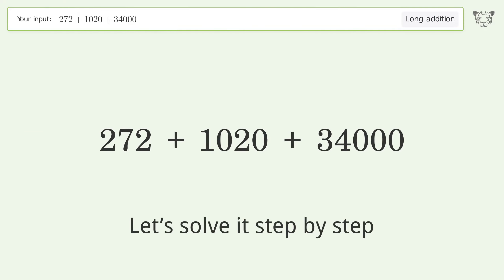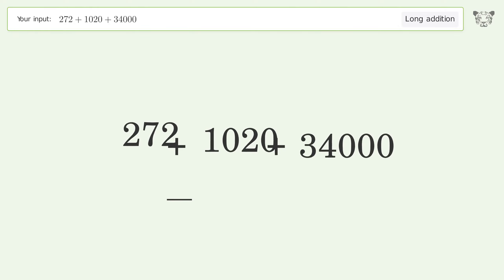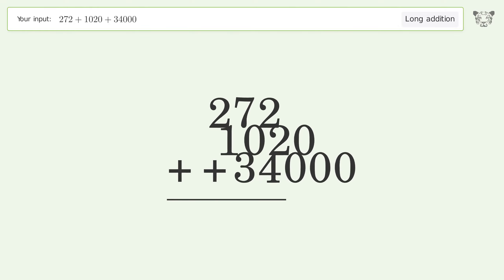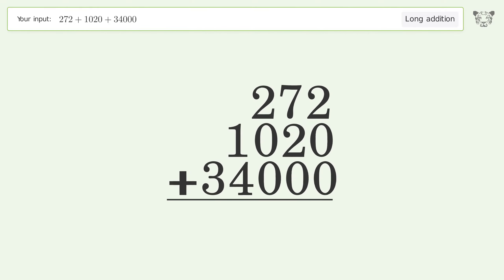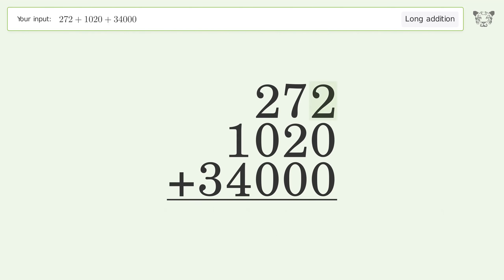Let's solve it step by step. Rewrite the numbers from top to bottom, aligned by their place values. Add up the digits in each column from right to left: 2 plus 0 plus 0 equals 2.